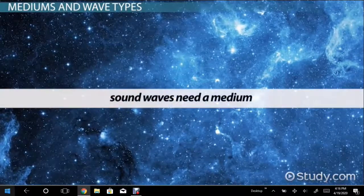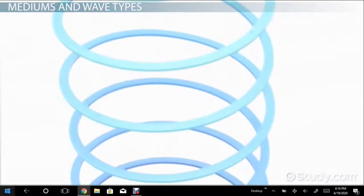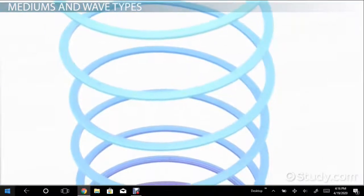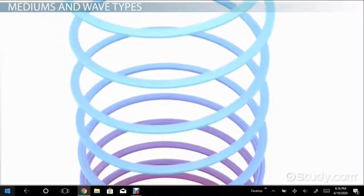Sound waves need a medium or material to travel through. These kinds of vibrational waves have another name, longitudinal waves. In fact, there are two main types of waves, transverse and longitudinal.